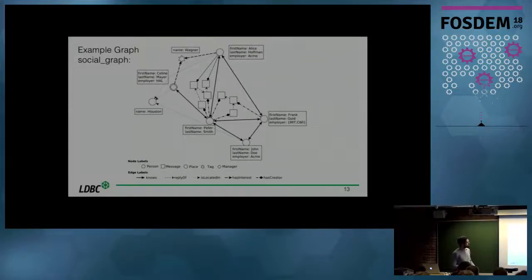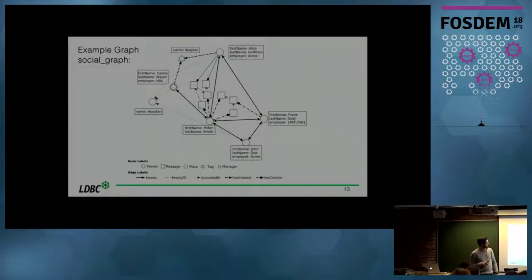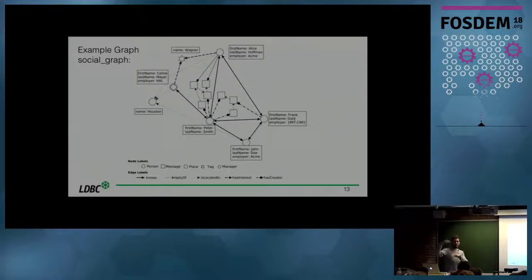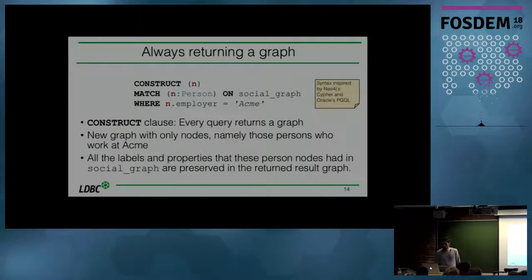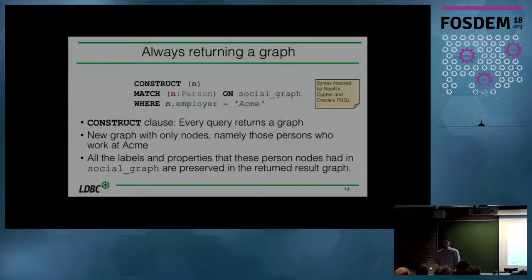In G-Core, I'll use a small social graph as an example, inspired by LDBC benchmark data — with people, their names, employers, messages exchanged in a forum, et cetera. To be able to abstract and create graphs in a query, every G-Core query has a CONSTRUCT clause. The other parts — MATCH and WHERE — are pretty much like what you know from existing graph query languages like Cypher or PGQL, using ASCII art syntax to define a pattern, specify which graph to match on, and add predicates.